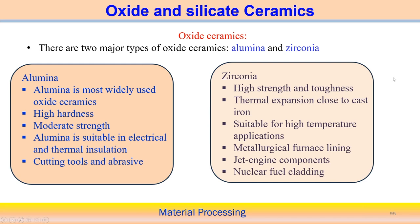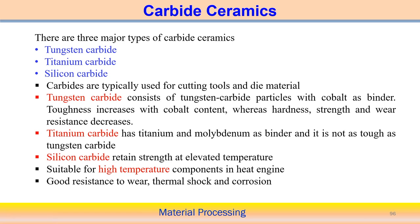There are three major types of carbide ceramics: tungsten carbide, titanium carbide, and silicon carbide. Carbide is mainly used in making cutting tools. In the case of cutting tools, tungsten carbide consists of particles with cobalt as a binder. Cobalt acts as a binder, and tungsten carbide cutting tools are usually produced using powder metallurgy techniques, since other manufacturing processes are not exactly suitable for handling ceramics.